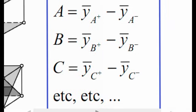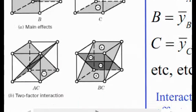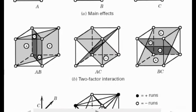Mathematically, what you're doing is you're taking the difference between the response variable at high and low values of these three different main effects, a, b, and c. You can do the same thing for the interactions, and the interactions are represented by these planes.